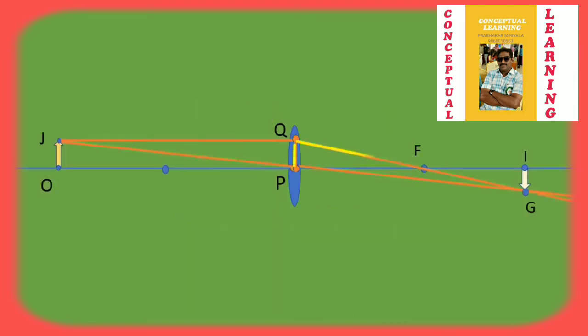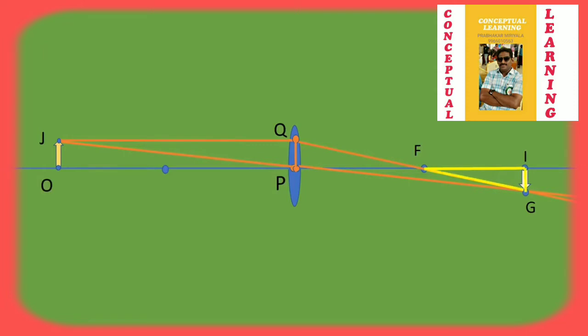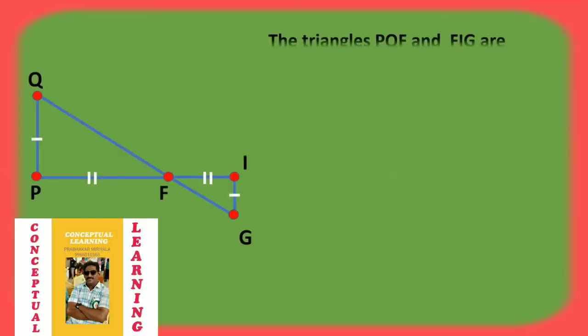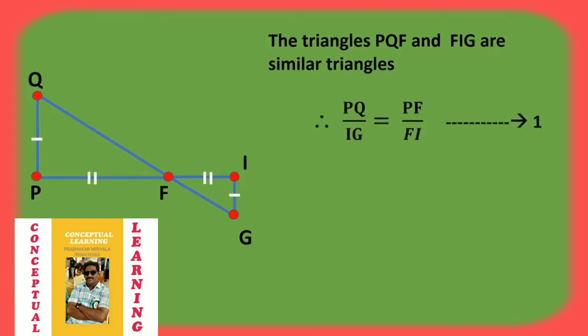From the diagram, triangle QFP and triangle FIG are similar triangles. So from the similar triangles principle, PQ/IG = PF/FI, which is equation number 1.